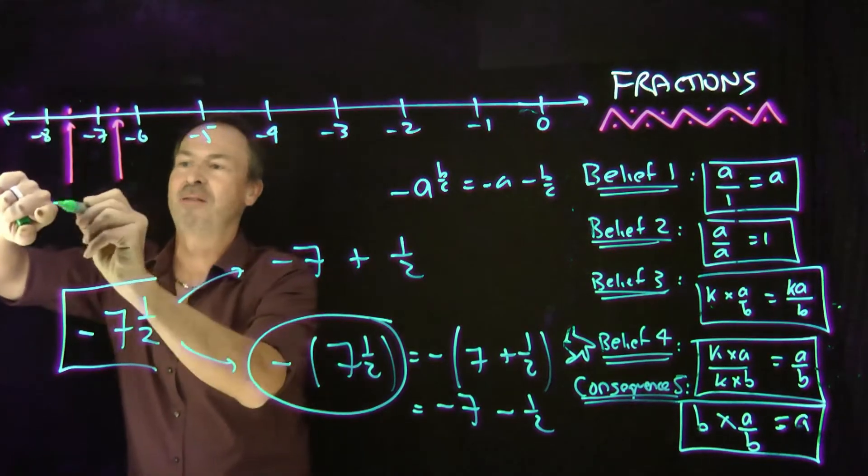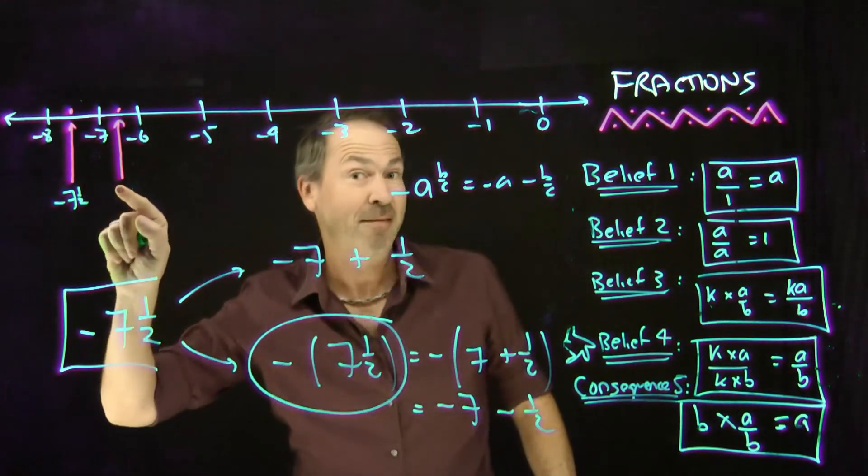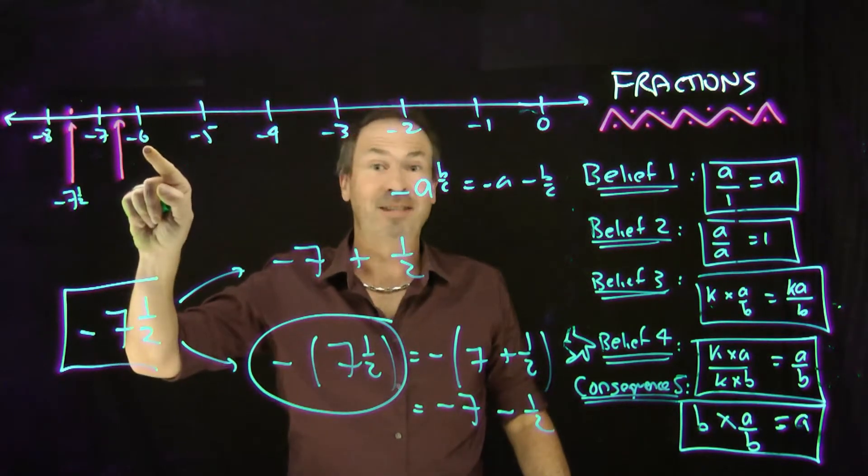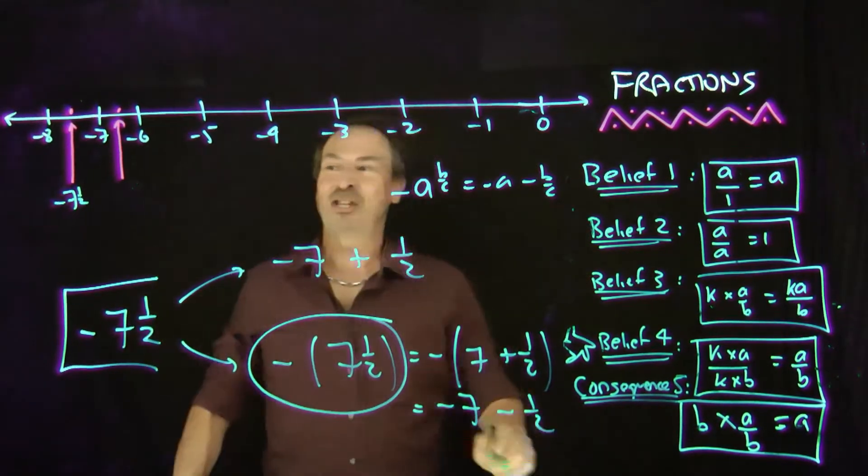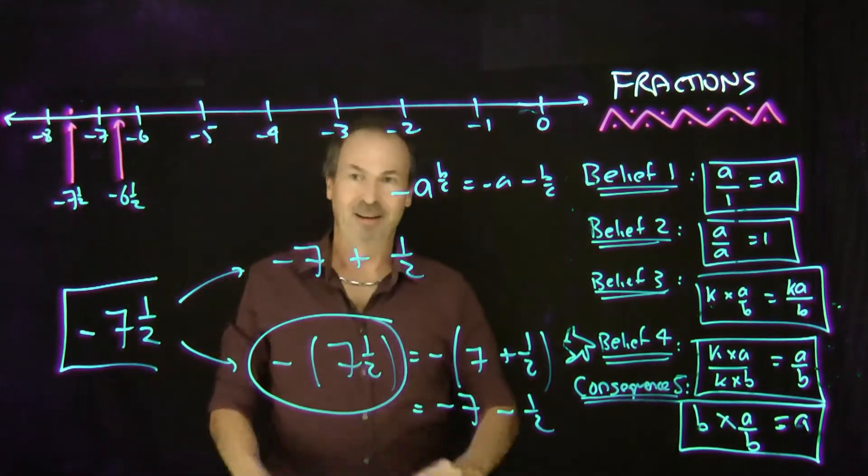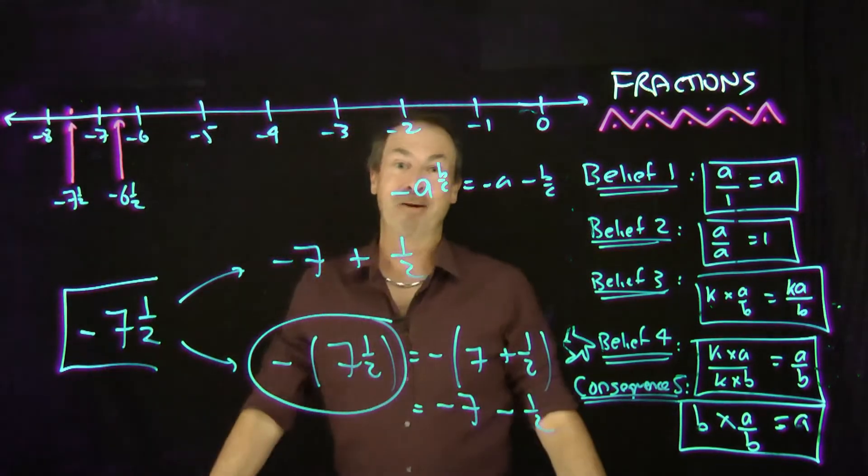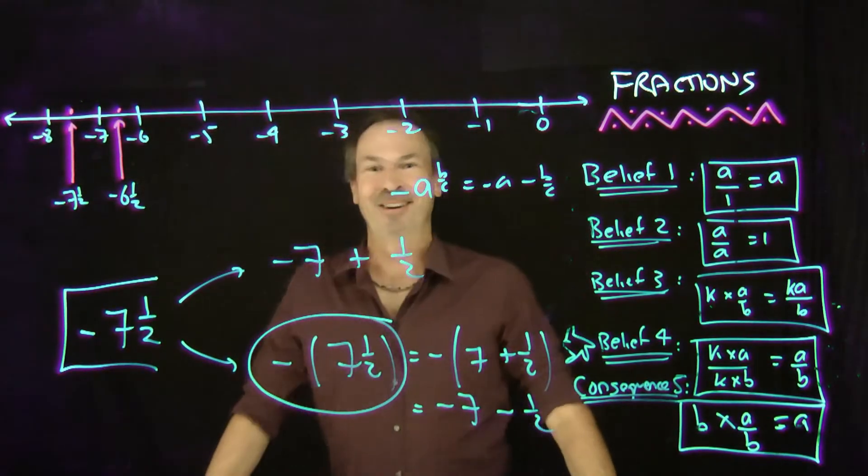So this is actually the interpretation of negative 7 and a half. So it makes you wonder then, how would I write that point? Well that is negative 6 down an extra half. As you can see this one here is negative 6 and a half. Very subtle. Little bit confusing. It's just a choice society has made to go this route.